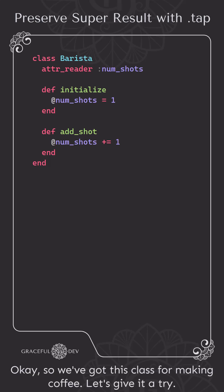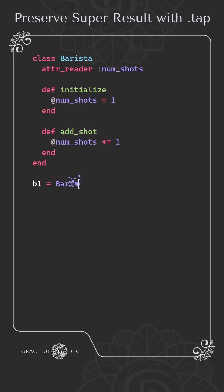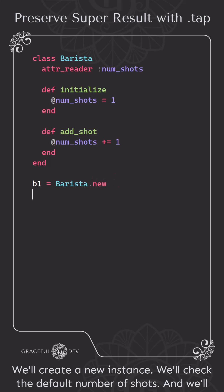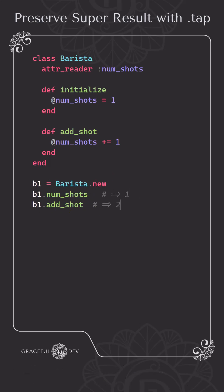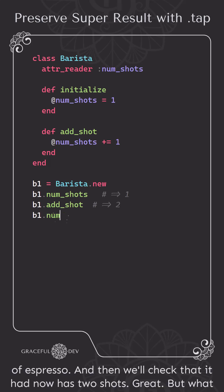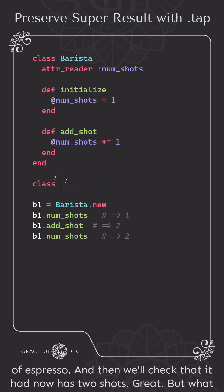We've got this class for making coffee. Let's give it a try. We'll create a new instance, we'll check the default number of shots, then we'll add a shot of espresso, and then we'll check that it now has two shots. Great.